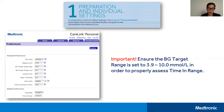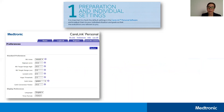One of the things we will all want to ensure is correct is the BG target range. Ensure that it is set to 3.9 to 10 millimoles per liter in order to properly and fairly assess time in range. Once you've completed this, click Update to save all your customized settings.